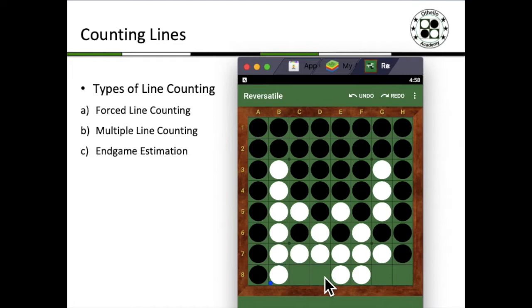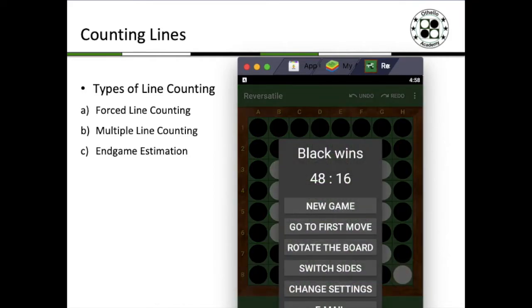And essentially you would then add 1, 2, 3, 4, 5, 6, resulting in 49 black discs. Finally white flipping 1 to h8, which would give you a result of 48 to 16 for black to win.